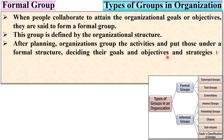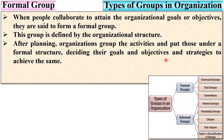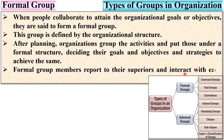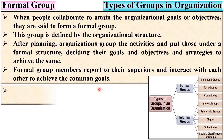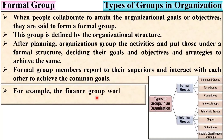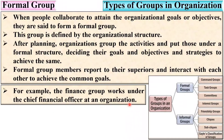After planning, organizations group the activities and put those under a formal structure, deciding their goals, objectives and strategies to achieve the same. Formal group members report to their superiors and interact with each other to achieve the common goals. For example, the finance group works under the chief financial officer at any organization — this is called a formal group.